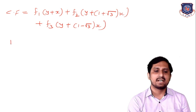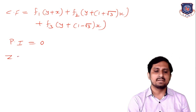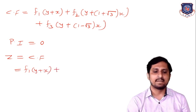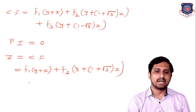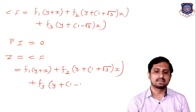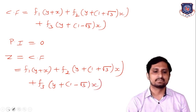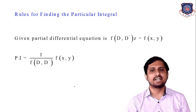This is my complementary function, and here the particular integral is 0 because the right-hand side is 0. So z is nothing but the complementary function: f1(y + x) + f2(y + (1+√3)x) + f3(y + (1−√3)x). Now the next concept is rules for finding the particular integral.